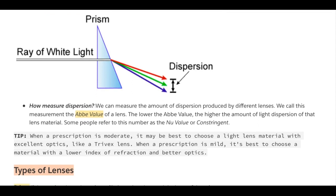To measure dispersion: we can measure the amount of dispersion produced by different lenses using what we call the Abbe value of a lens. The lower the Abbe value, the higher the amount of light dispersion of that lens material; the higher the Abbe value, the lower the amount of light dispersion. Some people refer to this number as the nu value or constringent, but Abbe value will come up on the ABO exam, so you should know that.